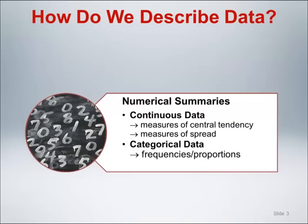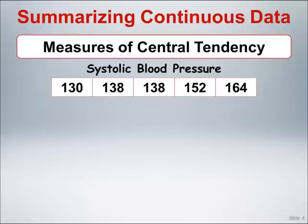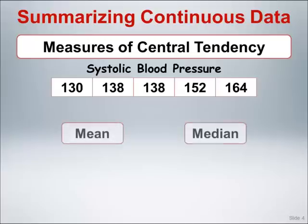Starting with numerical summaries for continuous data, let's look at measures of central tendency and spread. For the purposes of illustration, I have randomly selected five systolic blood pressure measurements from the sample to use for our calculations, shown here in ascending order. The two primary measures of central tendency I want to focus on are the mean and the median.